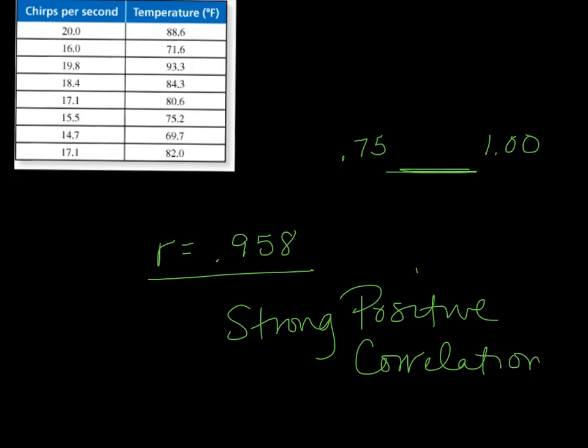And so we just did two skills. Number one, we found the correlation coefficient R. And number two, we used that to describe the correlation. And those are the main skills we want you to get out of this section.